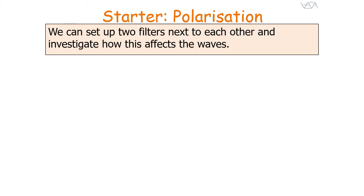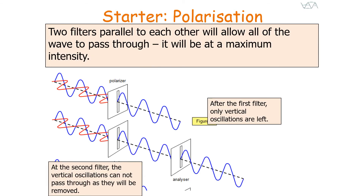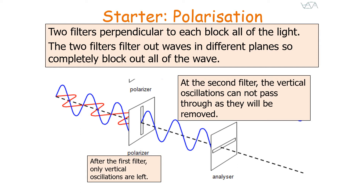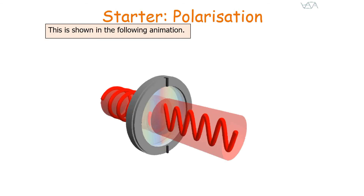We can set up two filters next to each other and investigate how this affects the waves. Two filters parallel to each other will allow all of the wave to pass through at maximum intensity, because after the first filter only vertical oscillations remain, and the second filter also allows vertical oscillations through, so they are not removed. But two filters perpendicular to each other block out all of the light, because after the first filter only vertical oscillations are left, and the second filter removes those vertical oscillations entirely.